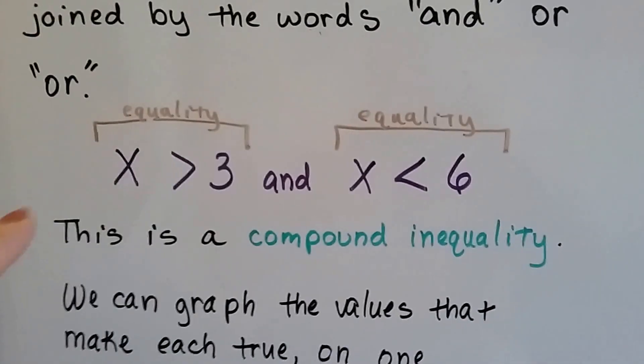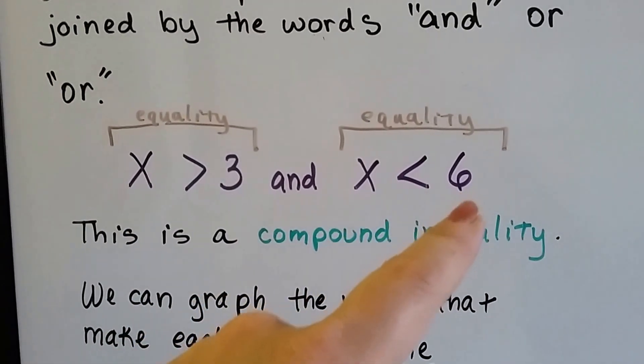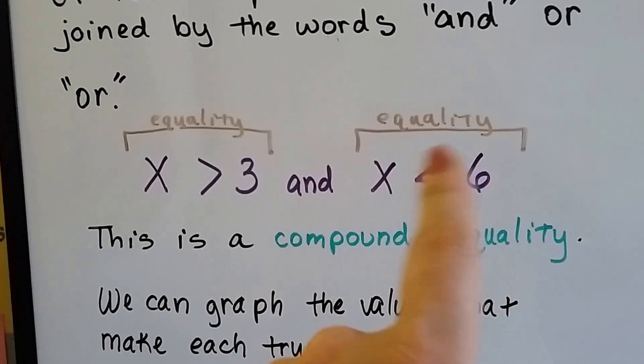This is a compound inequality: X is greater than 3 and X is less than 6. They're joined together by the word 'and'. Here's one inequality, here's another inequality.